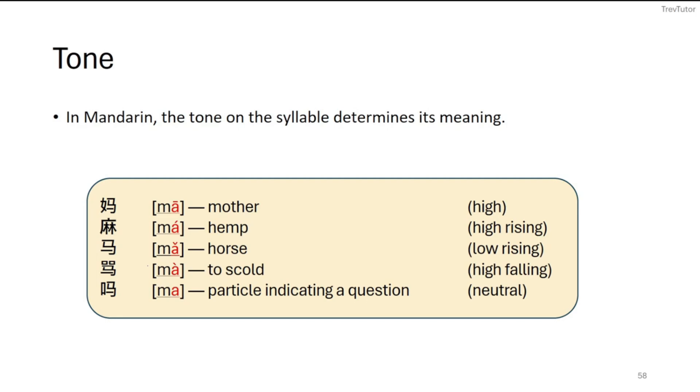So what some linguists do instead of writing high, high rising, low rising, or using these symbols, they might also use numbers. So for example, a high tone would be a five. So it's usually on a one, two, three, four, five scale.